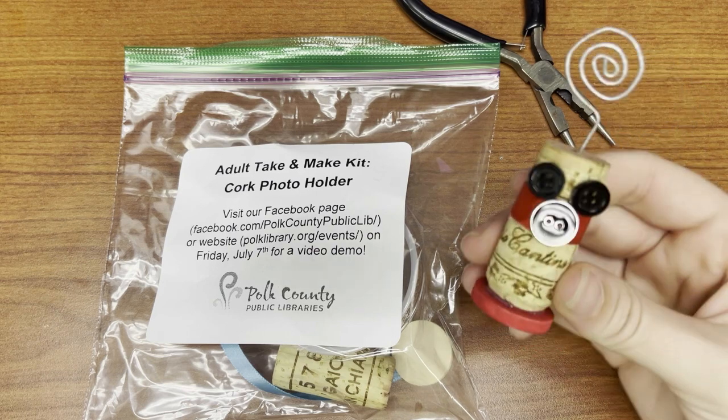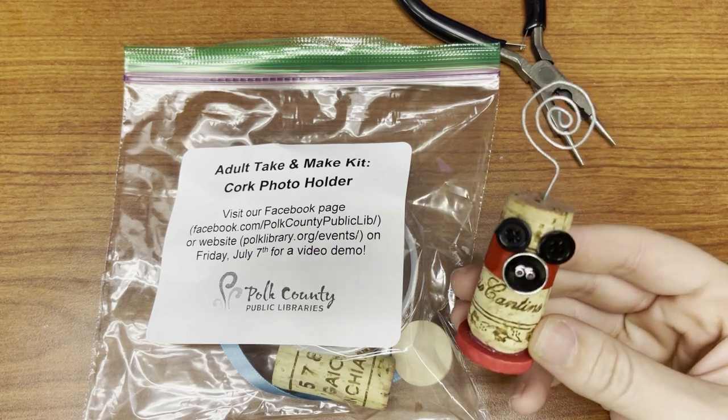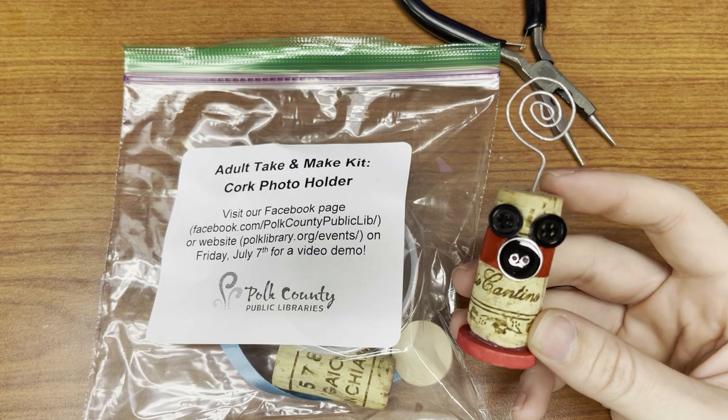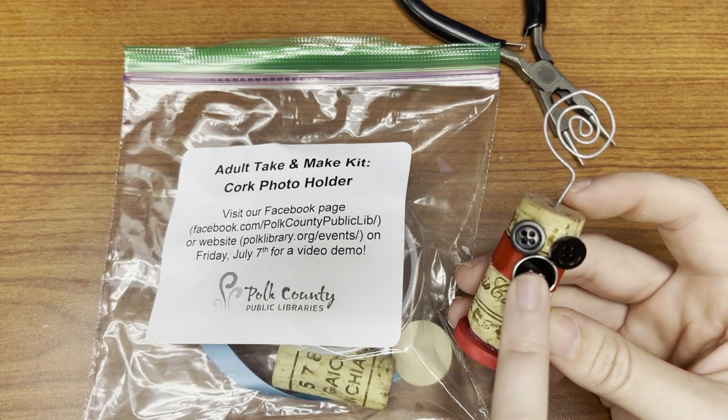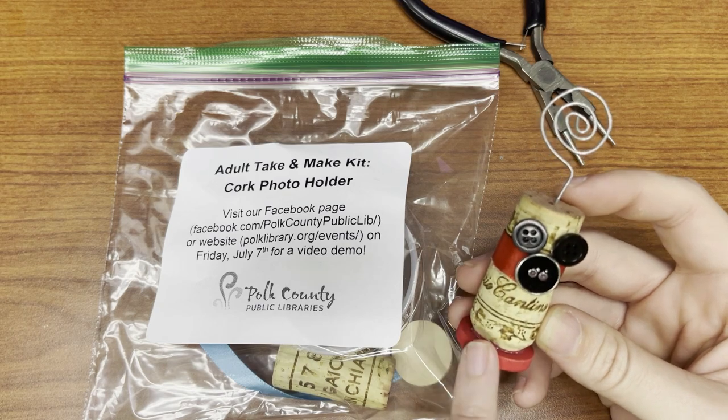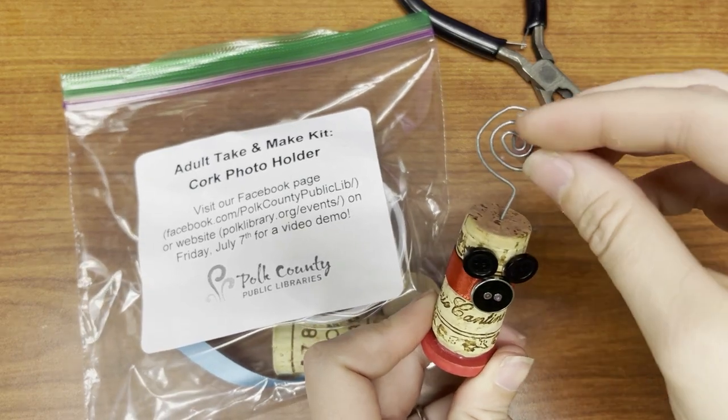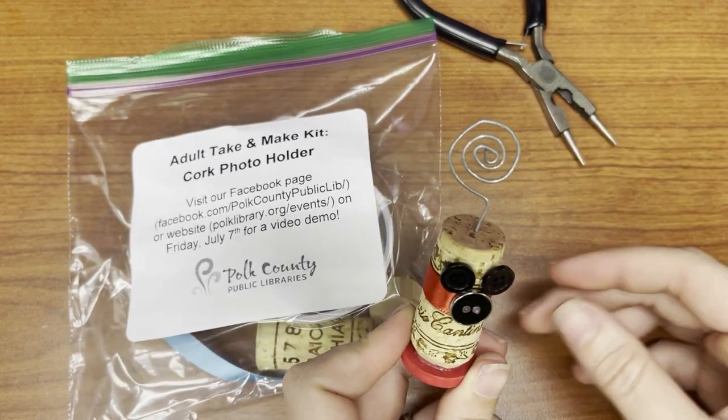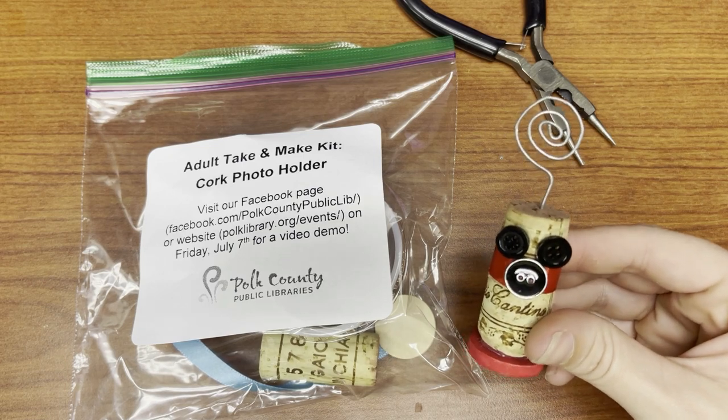And this is an example of one that I made a little bit earlier. Yours is going to look different. You can see I did some Disney inspiration on mine with the Mickey Mouse. We're actually going to use seashells and our color scheme is going to be light blue for this. But you're going to spin some wire and this holds a nice photo and you can put it up anywhere around your house and it just decorates the place up a little bit.